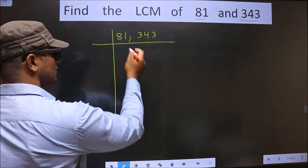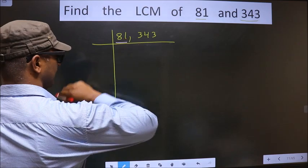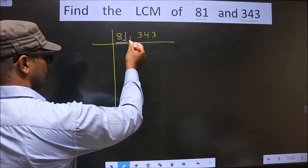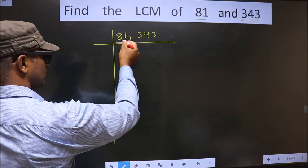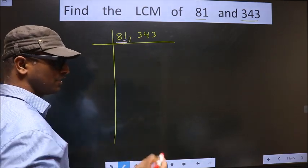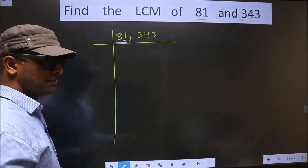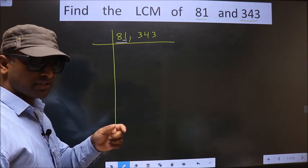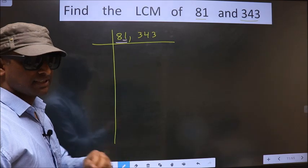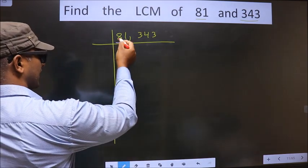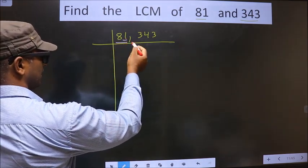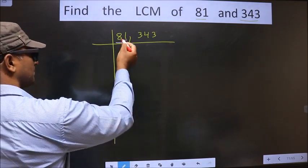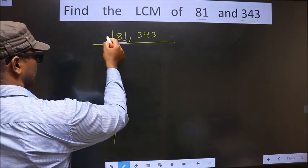We focus on the first number, that is 81. For this number, the last digit is 1, which is not even. So this is not divisible by 2. The next prime number is 3. To check divisibility by 3, we should add the digits. That is 8 plus 1, we get 9. Is 9 divisible by 3? Yes. So this number is also divisible by 3. So we take 3 here.